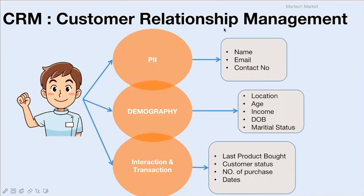To give you an example, if we take an insurance industry, a CRM platform of an insurance industry would have all the PII information like name, email address, contact number, maximum demographic information like age, income, date of birth, marital status, and for interaction and transactional information they'll have the policy the user opted for, number of policies, and dates like when the user opted for a policy or the next renewal date.